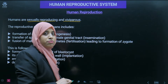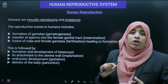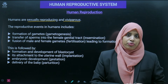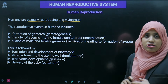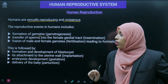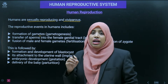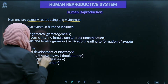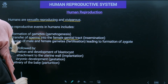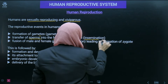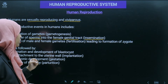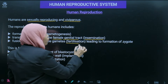Reproduction happens through a series of steps within an organism — these are called reproductive events. The first step is the formation of gametes, a process called gametogenesis. Then there is the transfer of the male gamete (sperm) into the female genital tract, known as insemination.